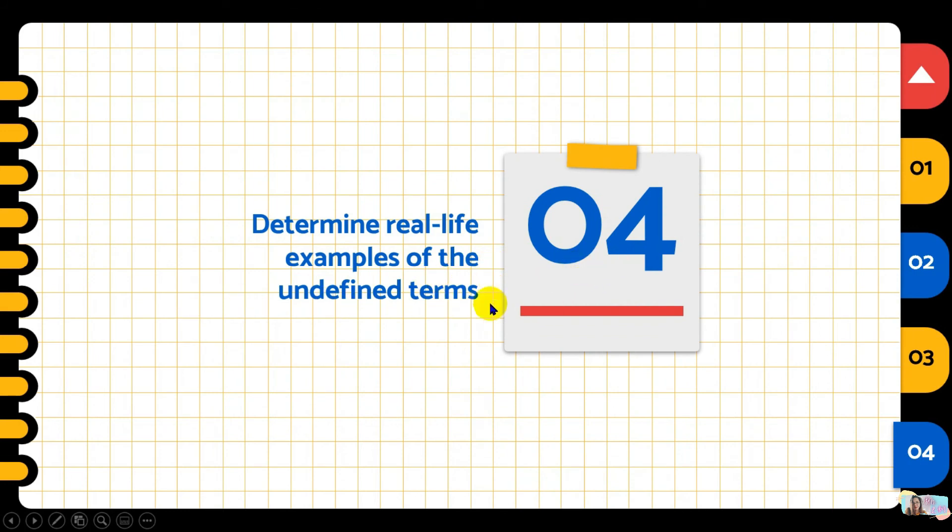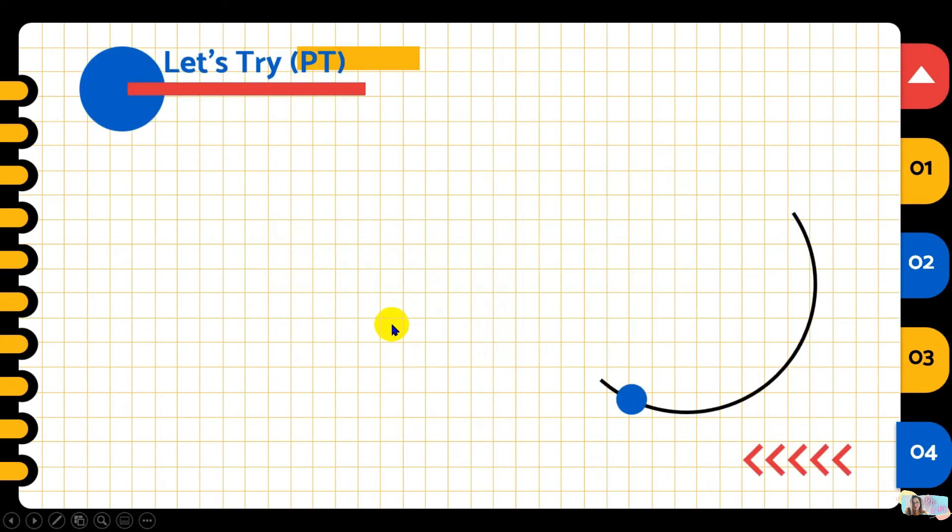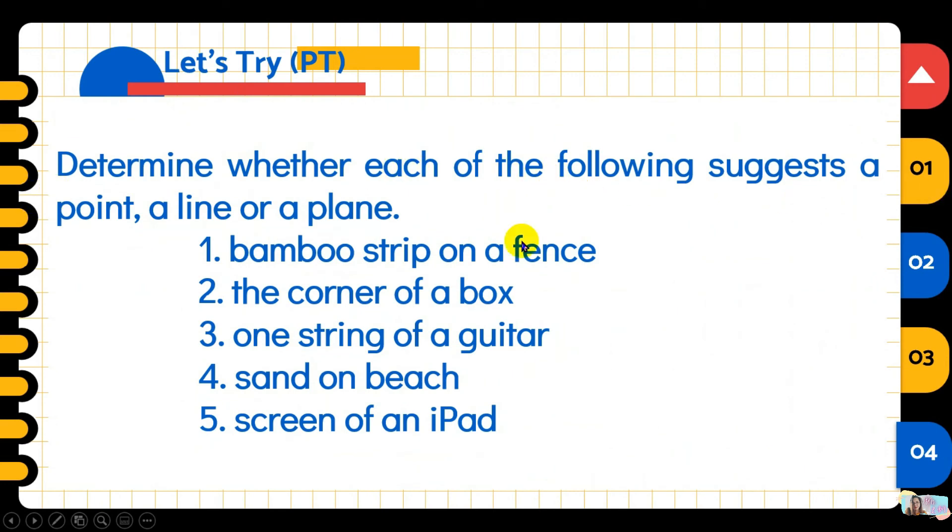Now, let us determine the real life examples of undefined terms. Besides what I showed, we have more here. Let's try this one. Determine whether each of the following suggests a point, a line, or a plane. You can pause this video for a while to write whether the following are point, line, or plane. Pause first before we say the answer. Answer first before we check if your answer is correct.